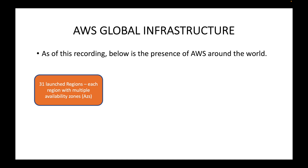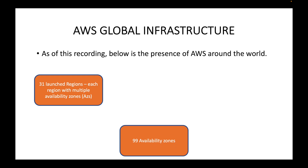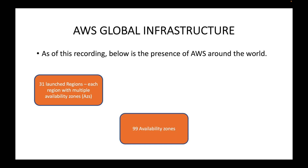We have 31 AWS regions. Regions are nothing but geographical locations — the physical locations where AWS data centers are available. You have 31 geographical locations where AWS has maintained their data centers. And within these regions, we have sub-regions. We call them availability zones, which are isolated from each other. As of this recording, we have 31 regions maintained by AWS, and within these regions, you have 99 availability zones. You can think of your regions as collections of data centers, and each of these data centers will be running in its own availability zone.